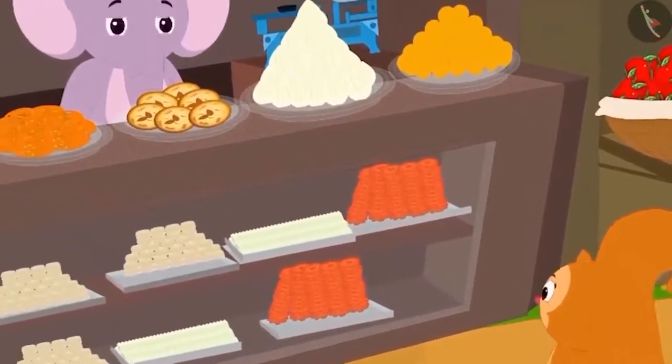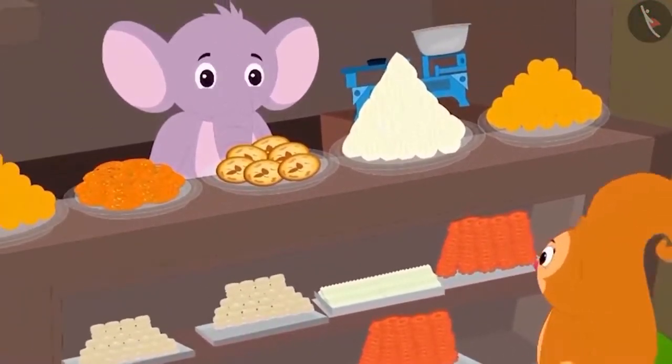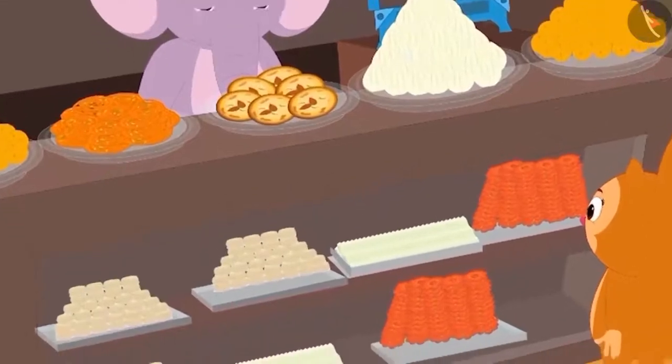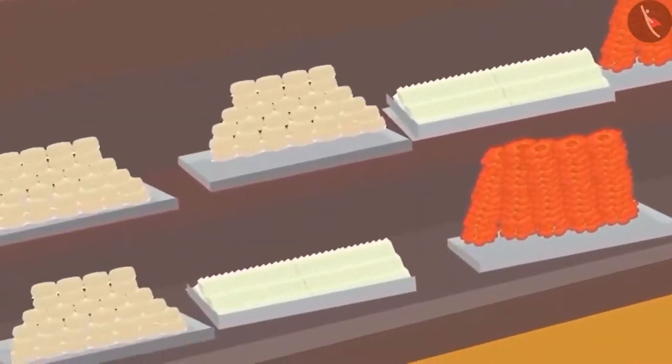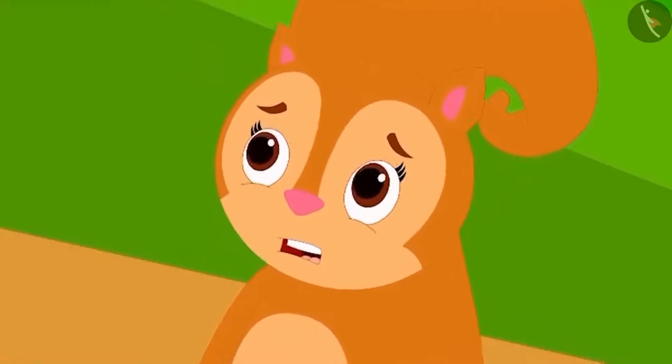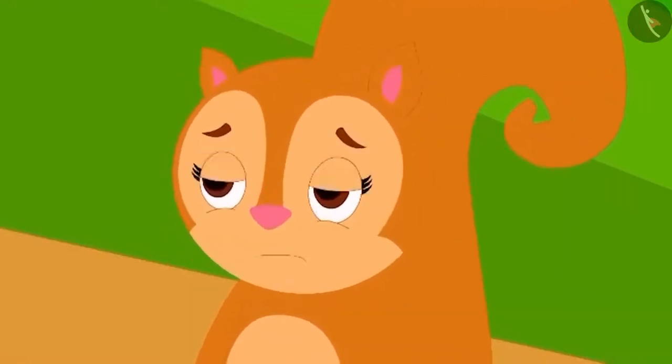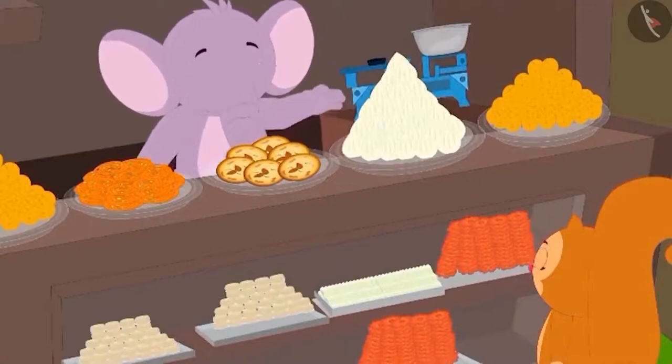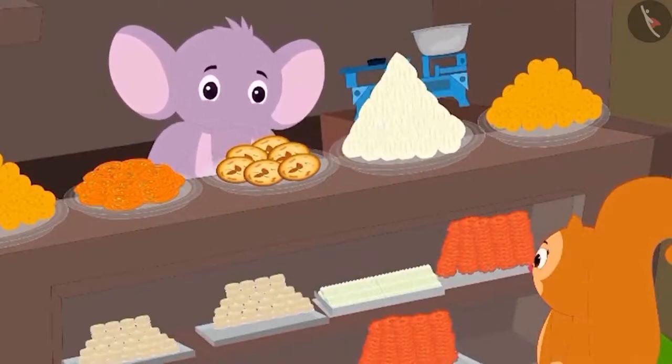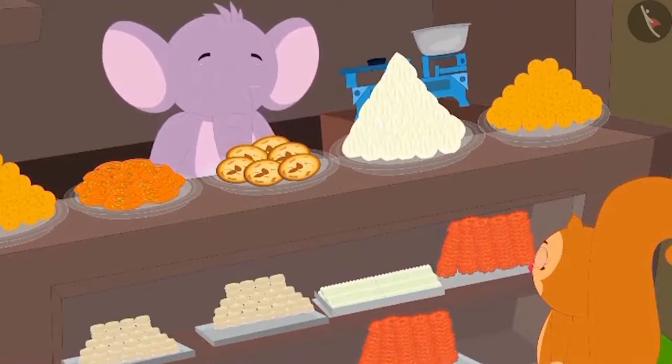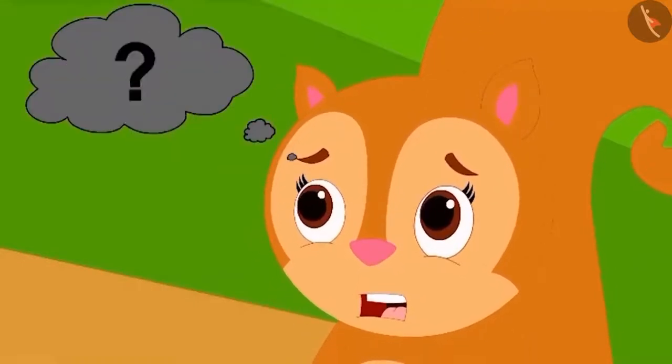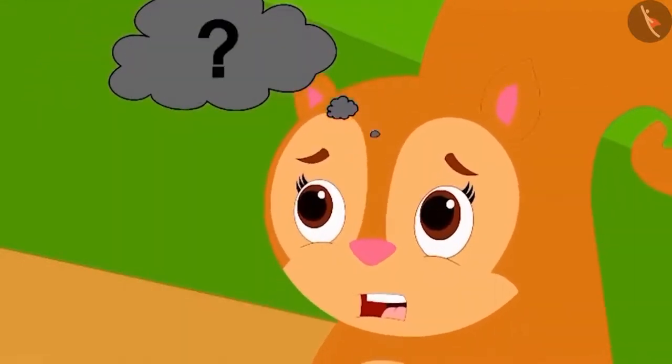Chanda has come to Appu's sweet shop today, but she looks confused. Appu has so many sweets. She is unable to decide what sweets she will buy. Appu tells Chanda that she can buy the sweet which has the shape she likes the most. Hearing this, Chanda got even more confused, because she doesn't know anything about the shapes.